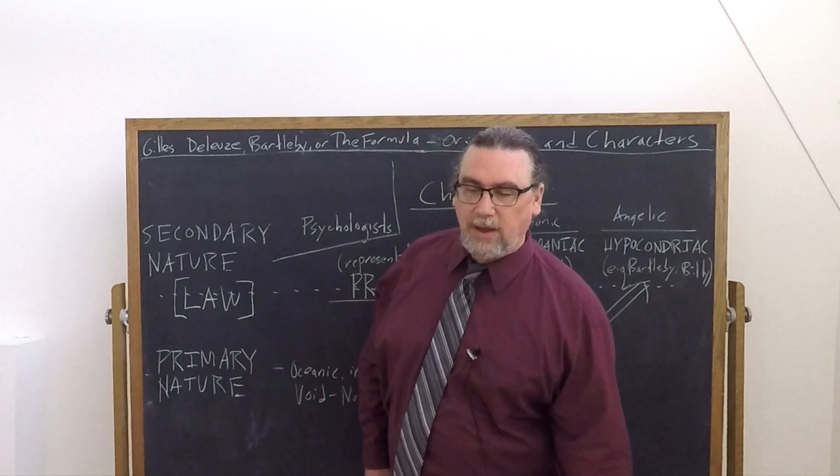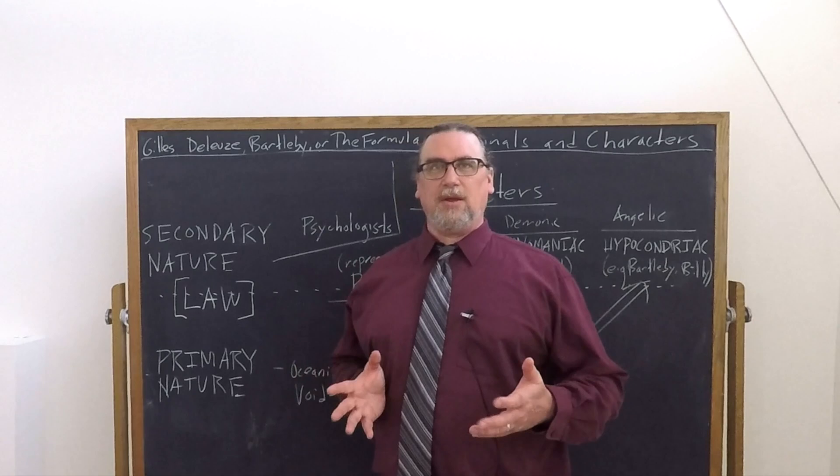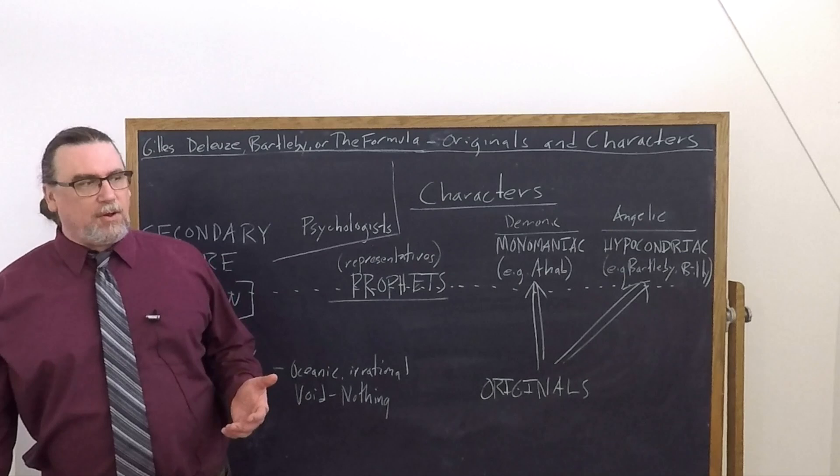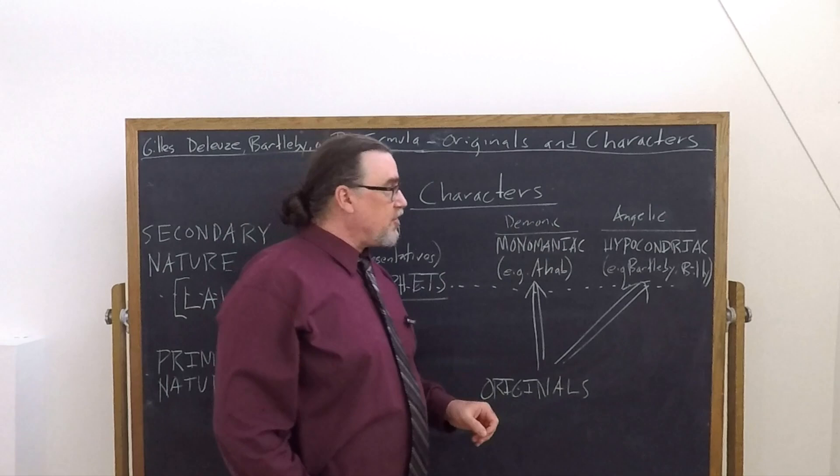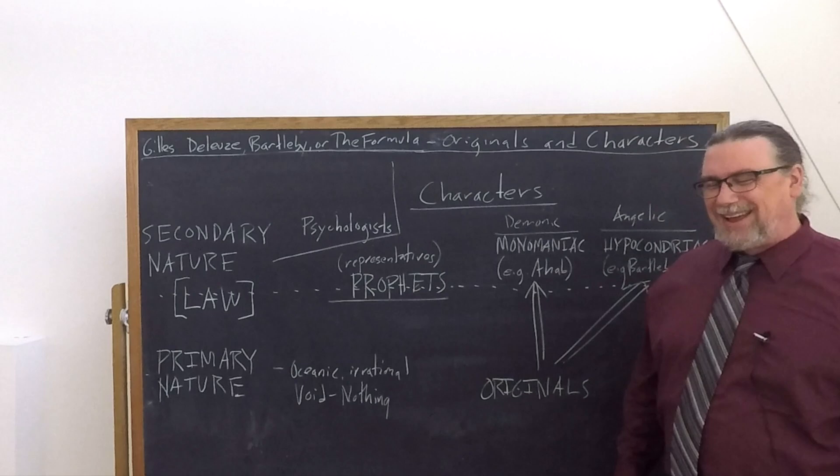He's mentioning Billy Budd, this late work that has to be in some respect reconstructed. And that's a work in which he says Melville brings in two originals. There is a demonic monomaniac being, which is Claggart, the master at arms. And then there's an angelic hypochondriac being, under the Melvillian psychiatry aspect that we've talked about elsewhere. And that would be Billy Budd himself.